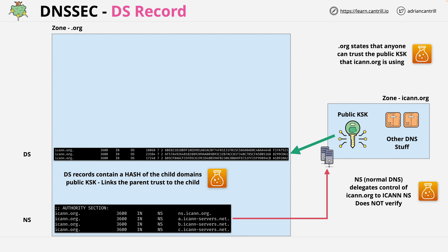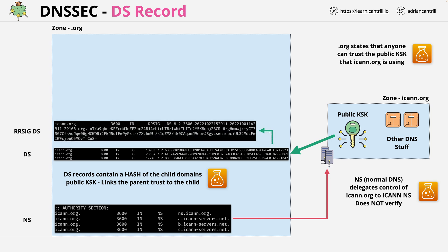Like everything else relating to DNSSEC, we need to provide a mechanism to validate this DS record set. This means a matching RR-SIG, which is a digital signature of the DS RR-SET, made using the .org zone's private zone signing key. At this point, all of the records can be validated within .org, and we can confirm the trust of ICANN.org.